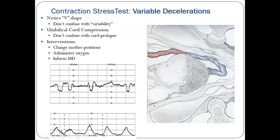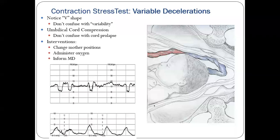The umbilical cord sometimes wraps around the neck of the baby — we call this cord compression. If cord compression occurs, it leads to variable deceleration, sometimes produced by a combination of early and late deceleration. Intervention: lateral or knee-chest position, change the mother's position to lateral, administer oxygen, prepare for cesarean section, and inform the doctor.